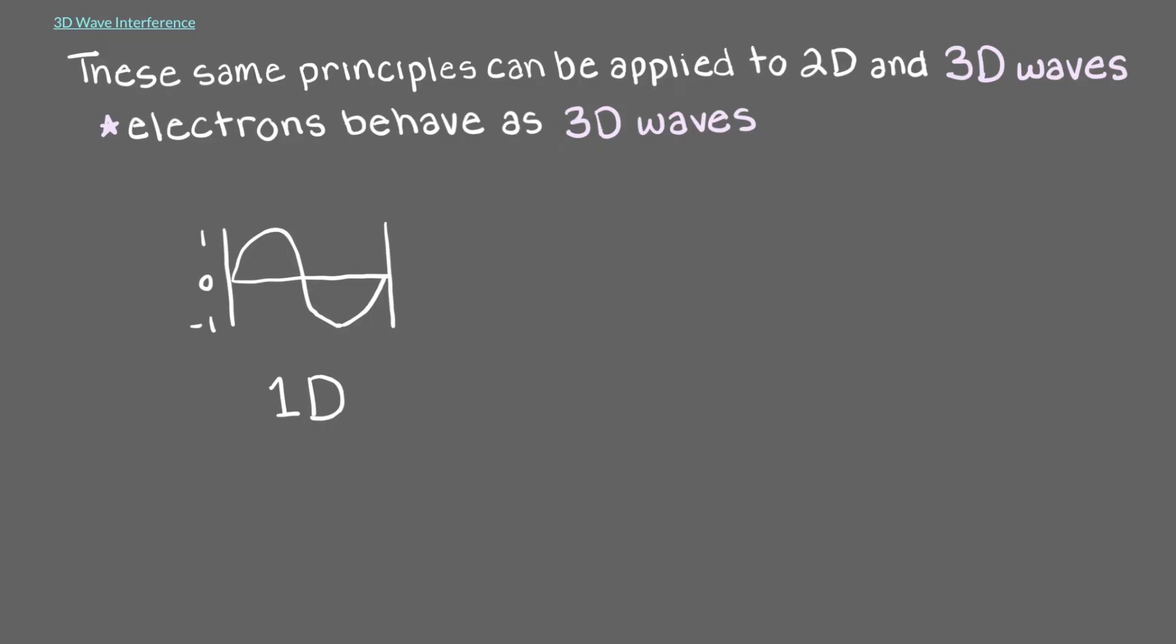Instead of representing a wave as a 1D line function, the simplest 3D wave is represented by a sphere. Since it would be difficult to draw a 3D sphere every time we need to represent a 3D wave, let's use a circle to represent our 3D waves.